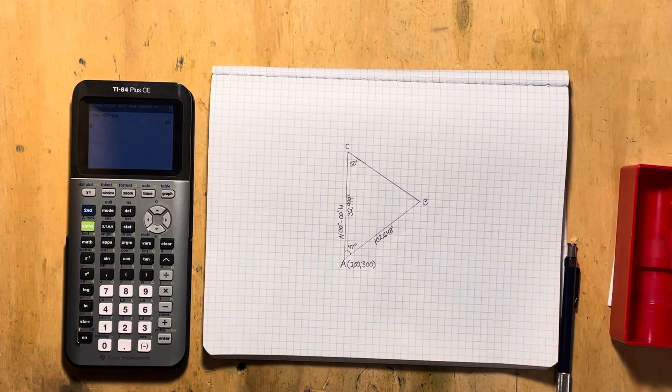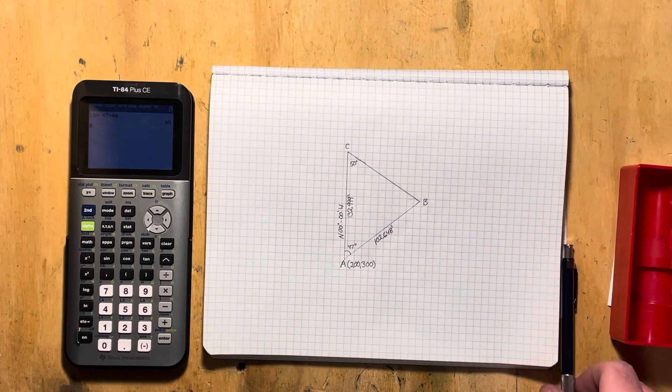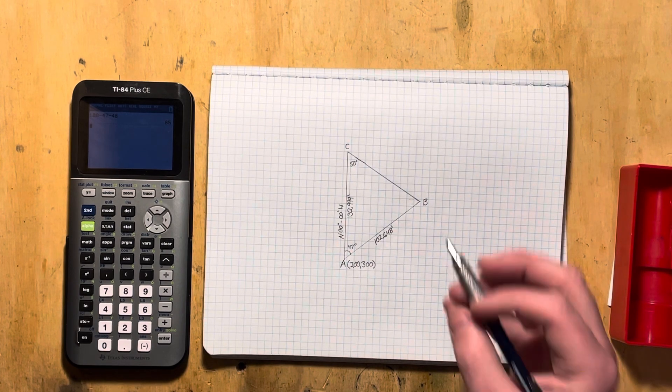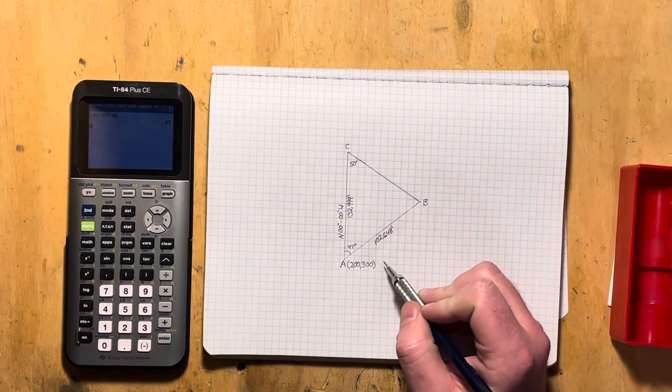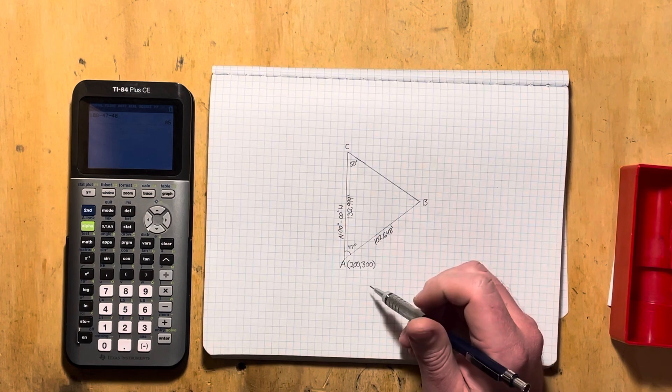This is an example problem for Professor Mokadam's Construction Layout and Site Development course. In this problem, we're going to try to find the bearing of line AB and the bearing of line BC.